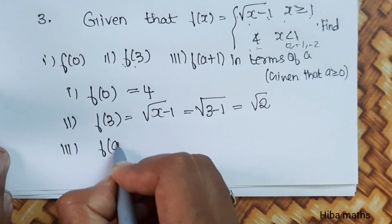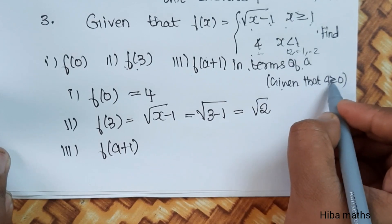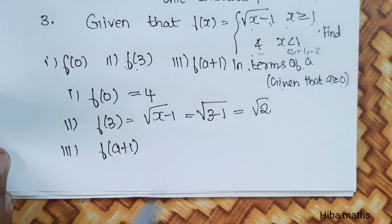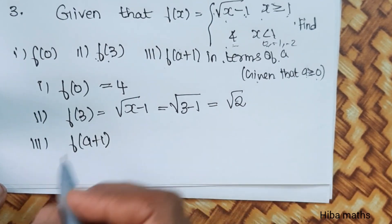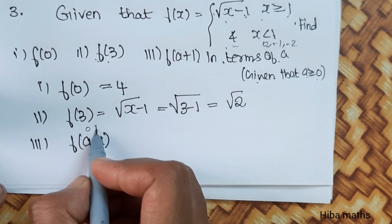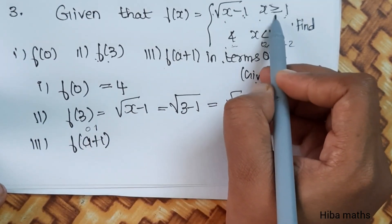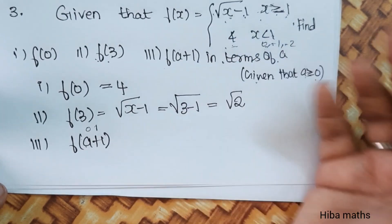f(a+1) in terms of a, given that a is greater than or equal to 0. So the condition is a greater than or equal to 0. Now, if a value is 0, substitute: 0 plus 1 equals 1. So 1 is greater than or equal to 1, so we use this function.